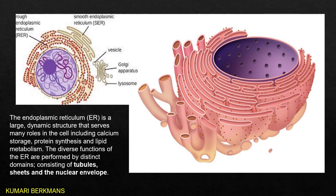The next organelle is the endoplasmic reticulum. There are two types: rough endoplasmic reticulum and smooth endoplasmic reticulum. The rough endoplasmic reticulum has ribosome particles attached to its wall, giving it a rough surface appearance, and it is located just around the nucleus. The smooth endoplasmic reticulum has no ribosomes, so its outer surface looks smooth. The main functions of the endoplasmic reticulum are protein synthesis, calcium storage, and lipid metabolism.